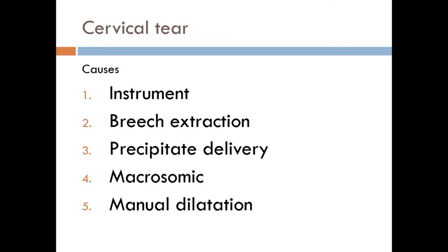The second type of tear in the genital tract is the cervical tear. Causes of cervical tear may include instrumental delivery, breech extraction before full dilatation of the cervix, precipitate labor, macrosomic baby, and manual dilatation of the cervix, which is an iatrogenic trauma.